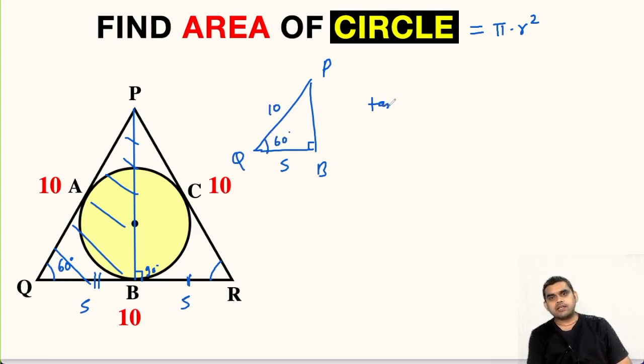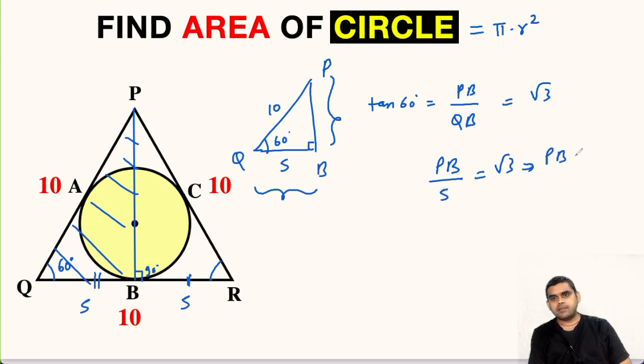We know that tan 60 degrees is equal to PB upon QB here. So PB means this and QB means this. So tan 60 is root 3. PB is unknown. So PB upon QB is 5 equals root 3. So from here we get PB equals 5 root 3. So we have found the value of PB.